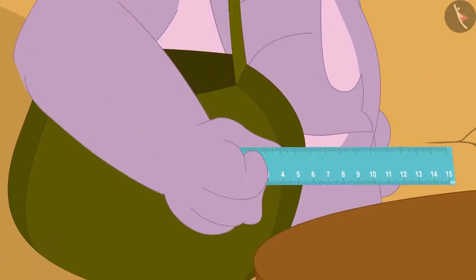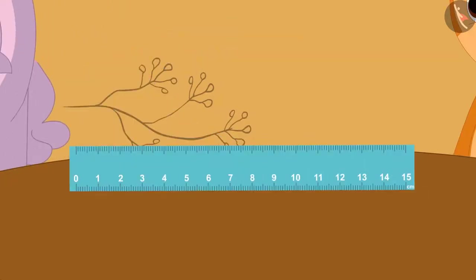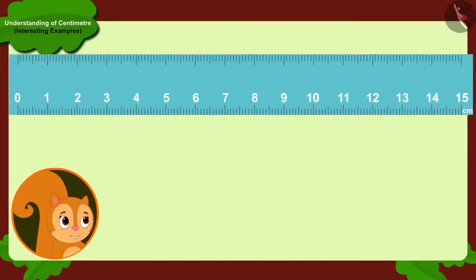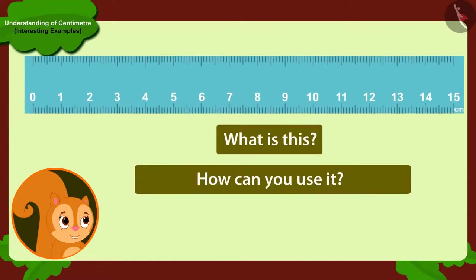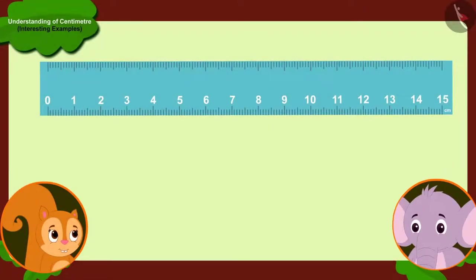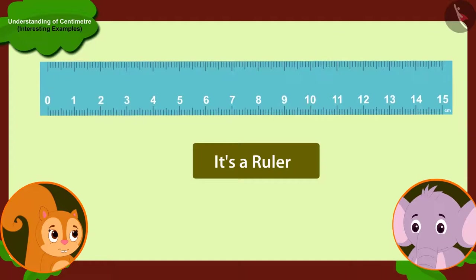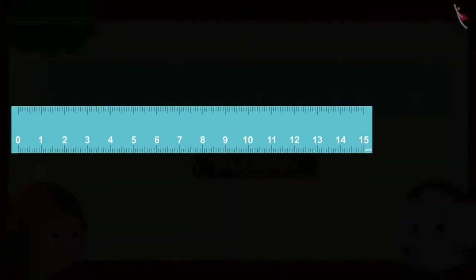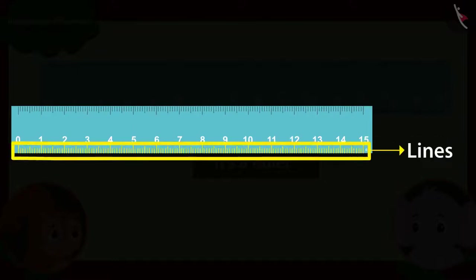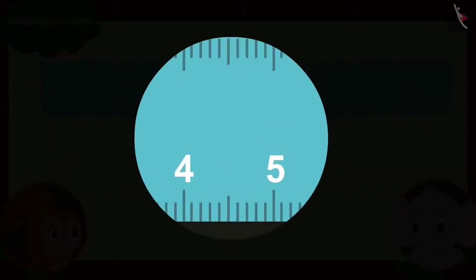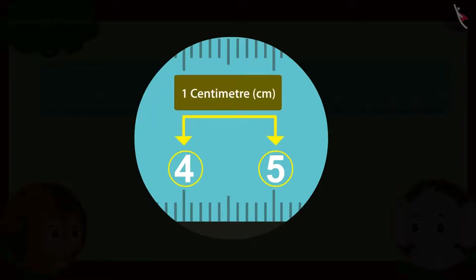Appu took out a plastic strip from his bag and placed it on the table in front of Chanda. Chanda asks him, what is this plastic strip and how can I use it to measure the length of objects in centimetres? Appu starts telling Chanda, this is a ruler. Can you see the numbers written and the lines drawn on it? The difference between any two consecutive numbers written on it is equal to one centimetre.